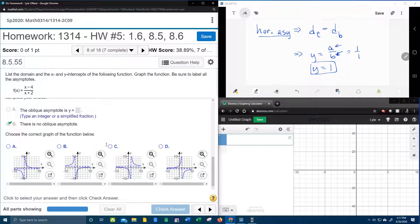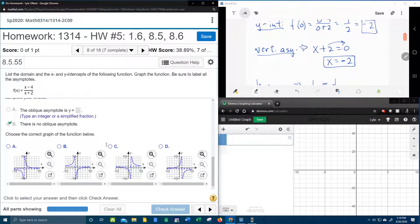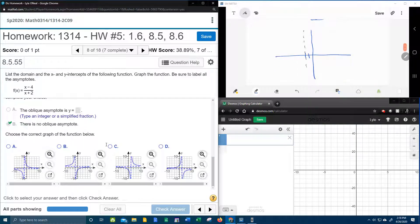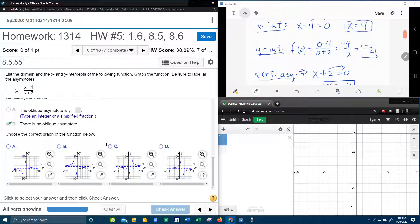Alright. Now for the graph. So now what we're going to do over here in our window where we're working is we're going to put all of this information together. And we're going to make ourselves a hand-drawn graph. Vertical asymptote x equals negative 2. Let's go ahead and lay that guy down. Right there. Horizontal asymptote y equals 1. There's the horizontal asymptote. What about x and y intercepts? Y intercept negative 2. X intercept 4.